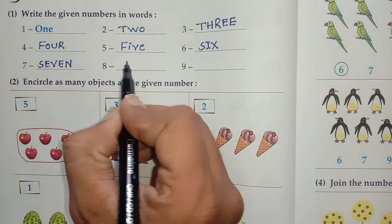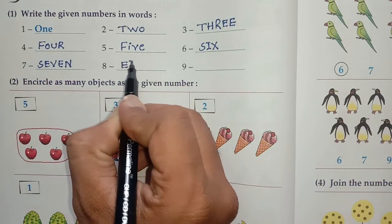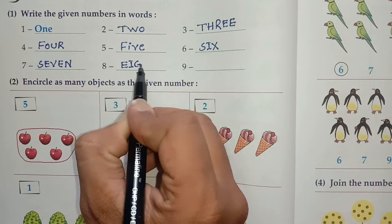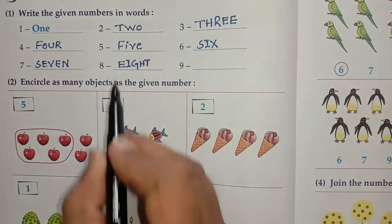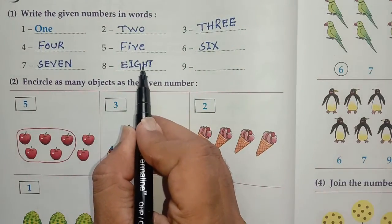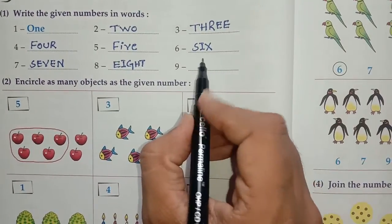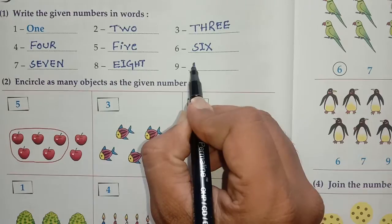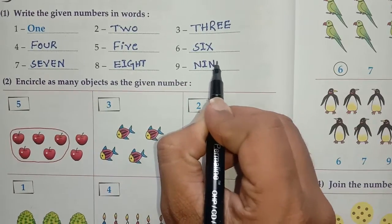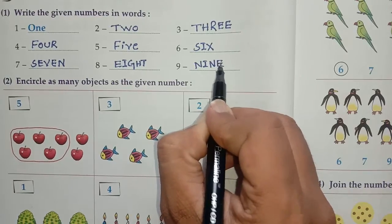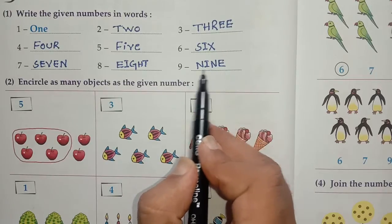Then 8. Let's see how to write it in words. E-I-G-H-T, 8. Repeat after me: E-I-G-H-T, eight. Then 9. N-I-N-E, 9. Repeat after me: N-I-N-E, nine.